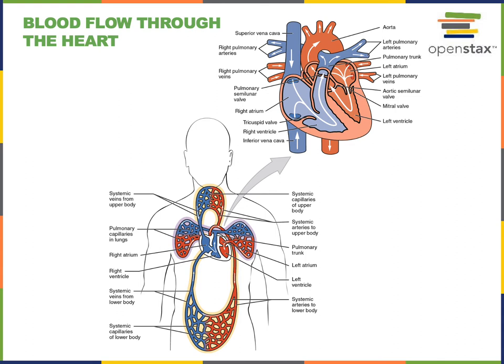Blood flows into systemic capillaries where nutrients are delivered to tissues. For example, oxygen is one of the major nutrients that is moving out of the blood at the systemic capillaries. The concentration of oxygen is much lower in the blood that's draining from the systemic capillaries through veins back to the heart.